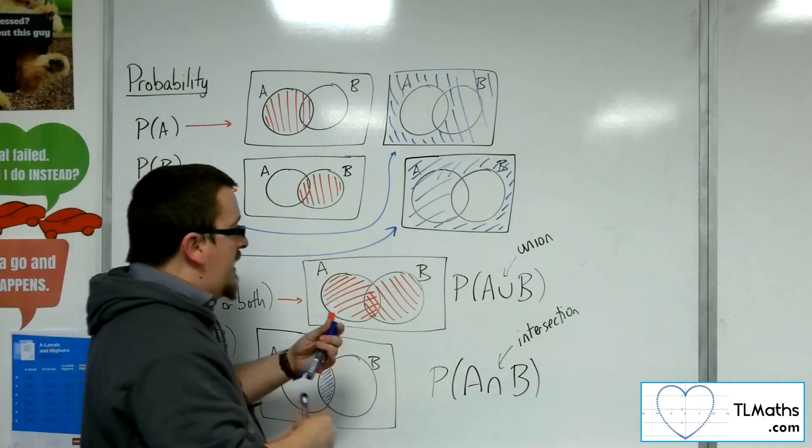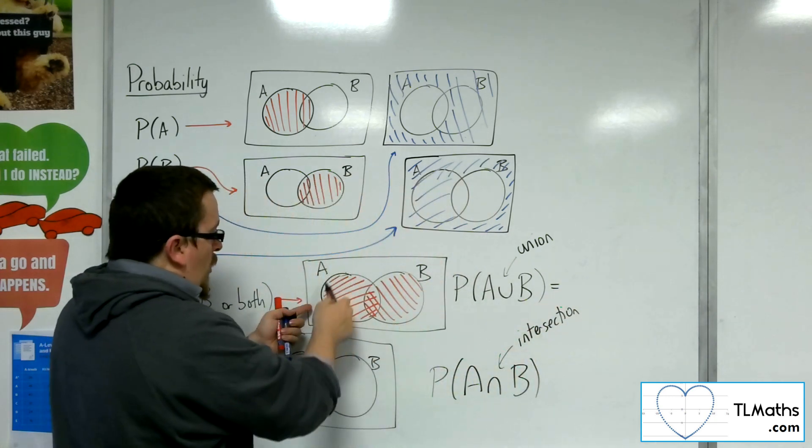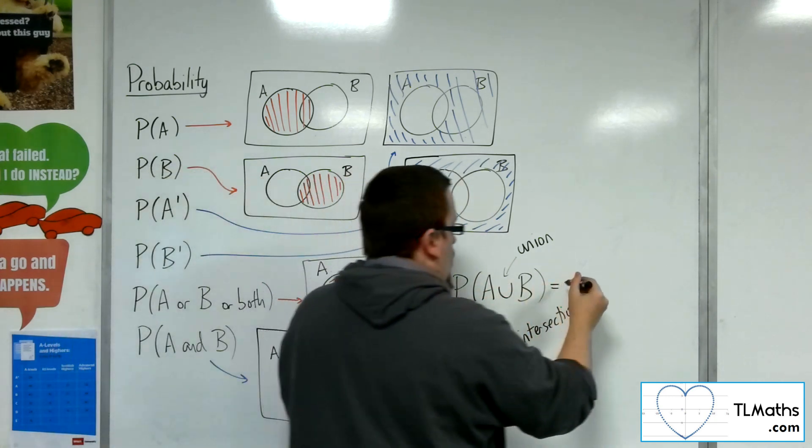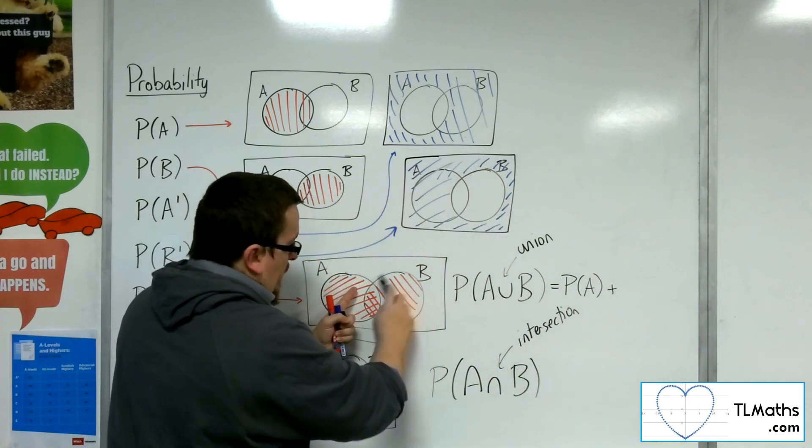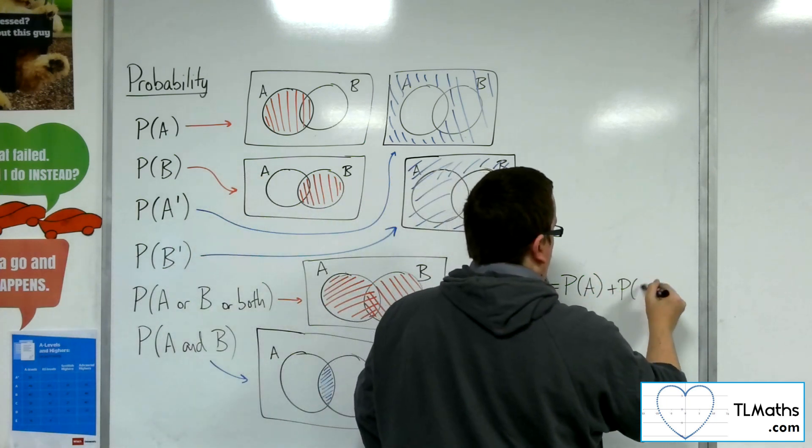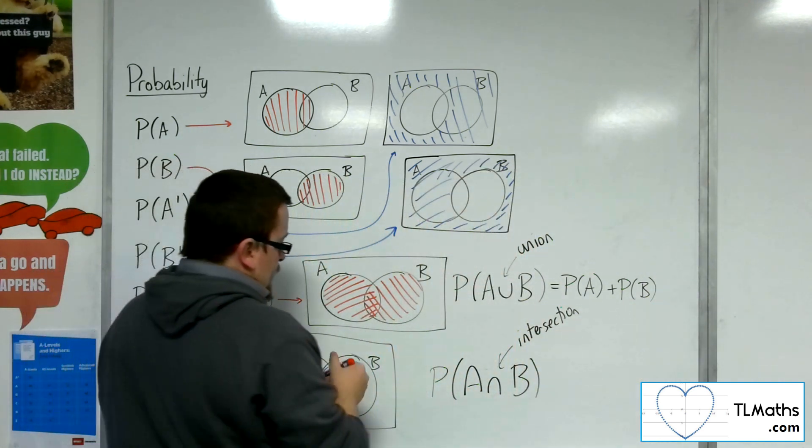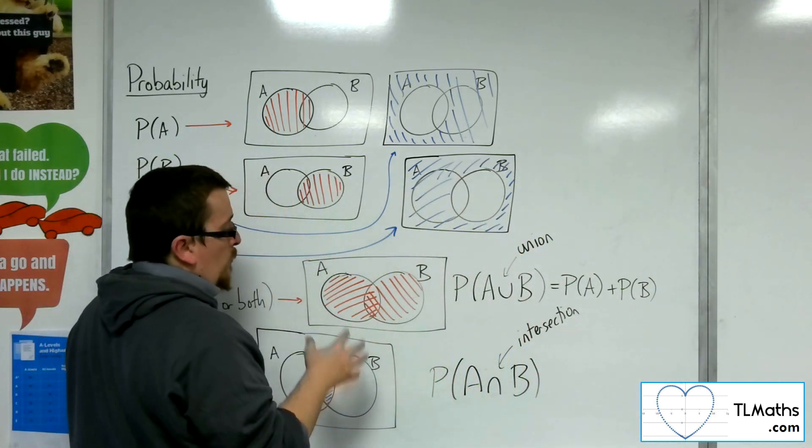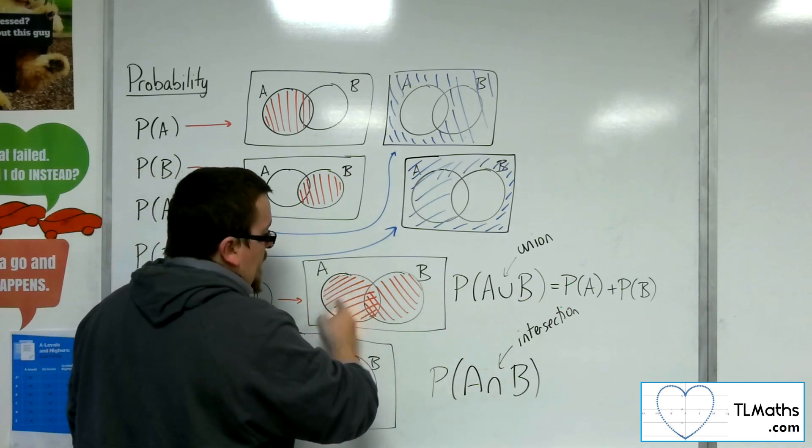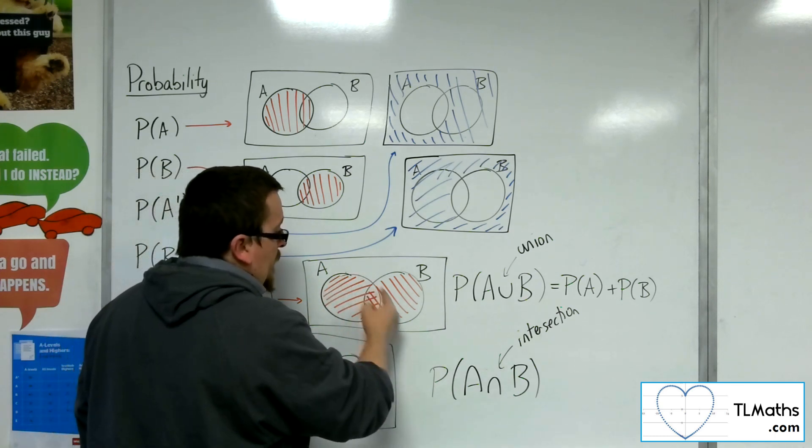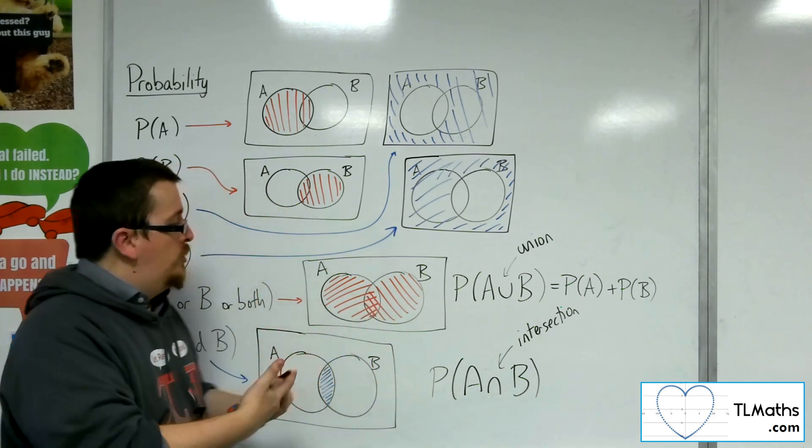Because the idea would be that we know that we've got all of A, so we've got all of the probability of A there, plus all of the probability of B. But what happens is that when we do that, and you can see how when I shaded it, I've got all of the lines going this way for A, I've got all of the lines going this way for B, but in the middle, that's created that kind of crosshatch, right?